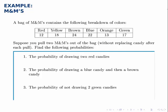We're given a breakdown of a bag of M&Ms by color, and we're told how many of each color are contained in the bag. Then we pull two M&Ms out of the bag without replacing the candy after each pull, and we're asked for the following probabilities.